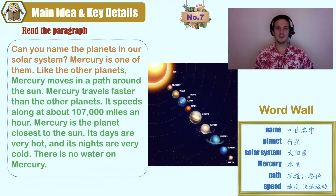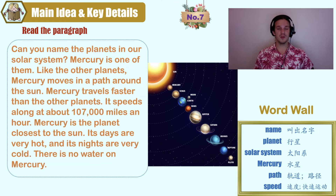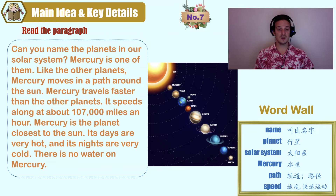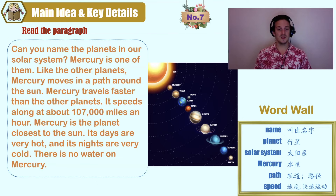Can you name the planets in our solar system? Mercury is one of them. Like the other planets, Mercury moves in a path around the sun. Mercury travels faster than the other planets — it speeds along at about 107,000 miles an hour. Mercury is the planet closest to the sun. Its days are very hot and its nights are very cold. There is no water on planet Mercury.